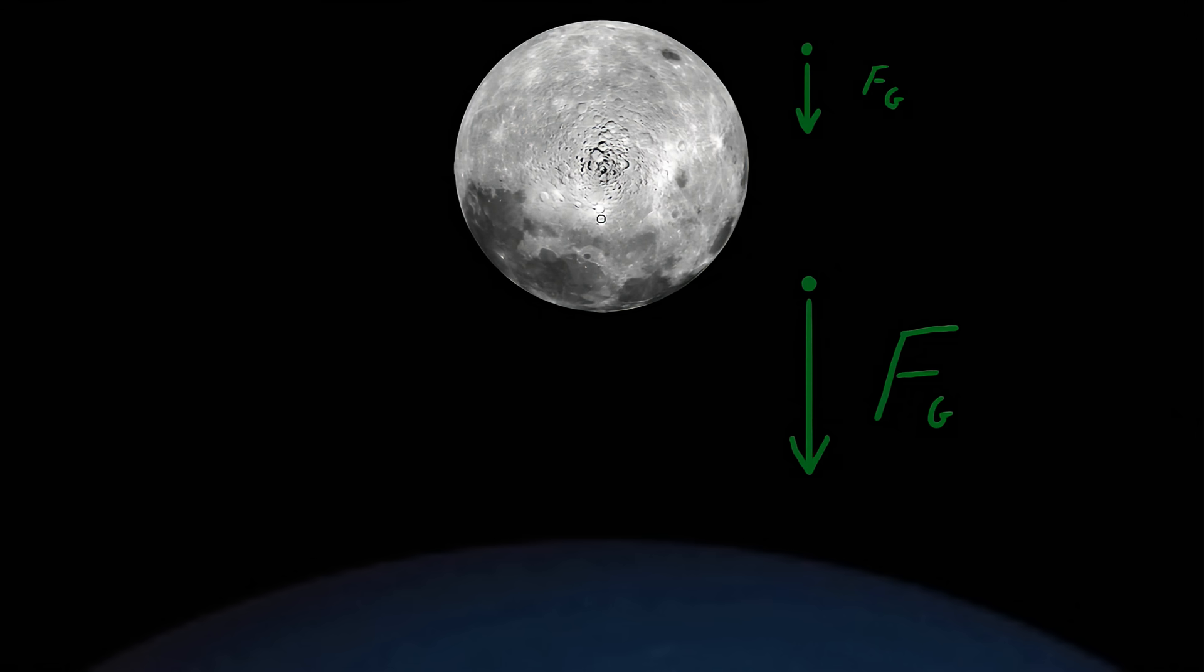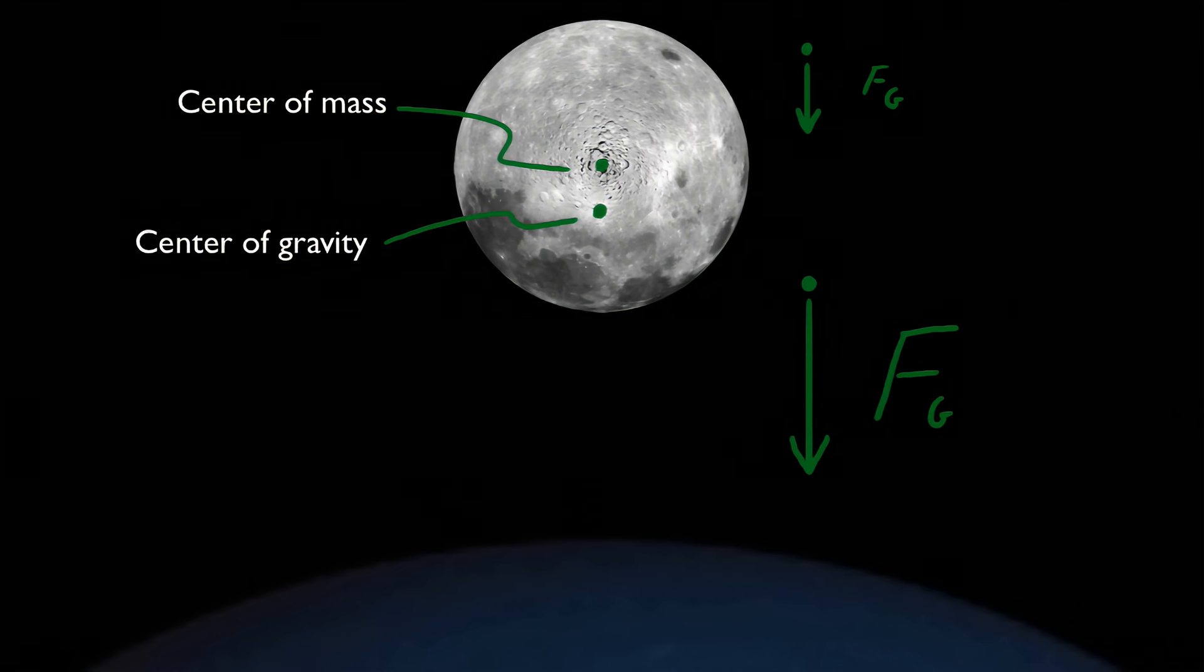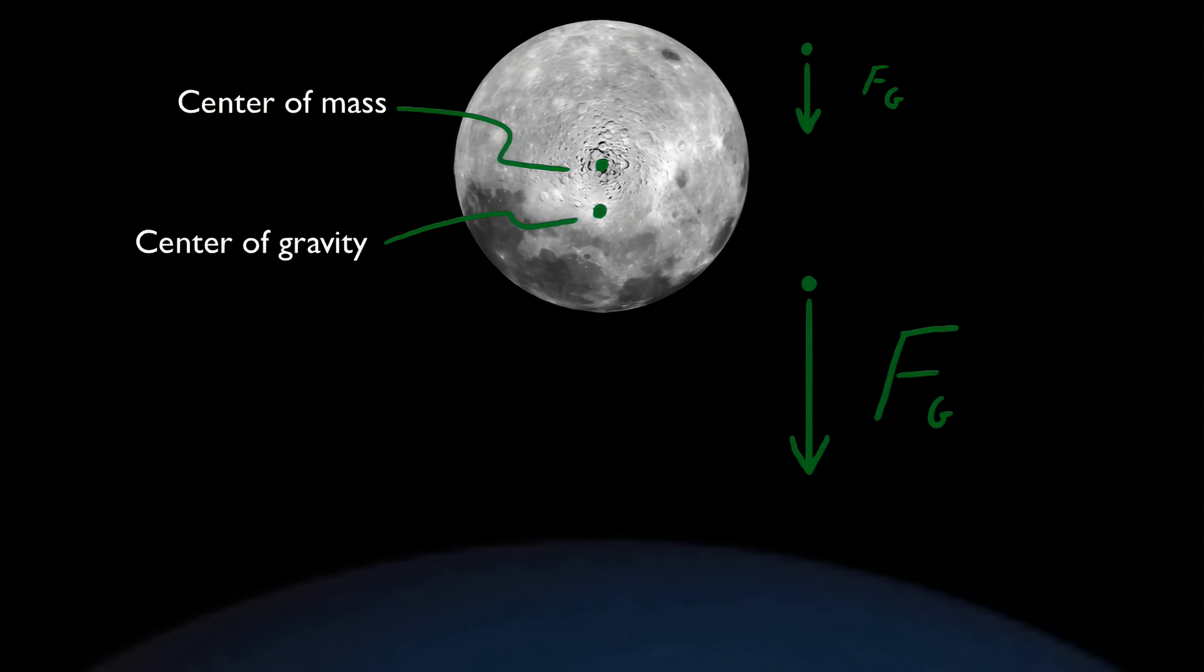What this means is that the moon's center of gravity relative to Earth is not the same as its center of mass. The center of gravity? Huh?